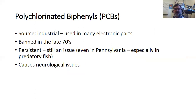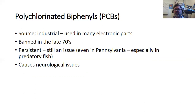Polychlorinated biphenyls — PCBs — were used in electronic parts as insulators. Many were banned in the 1970s and they are highly persistent, very stable molecules. Even though banned in the 1970s, PCBs are still an issue, even in Pennsylvania. If you search fish consumption warnings in Pennsylvania, many rivers have mercury or PCB warnings due to industrial runoff and pollution. PCBs also cause neurological issues in organisms.